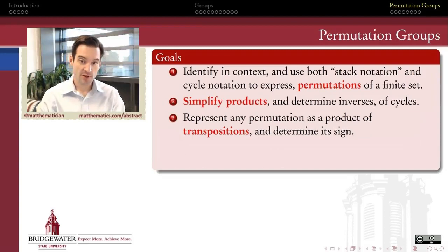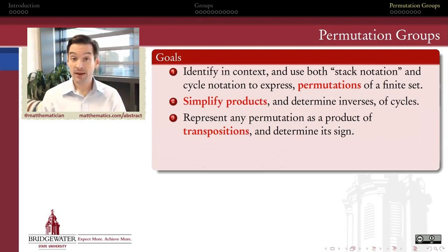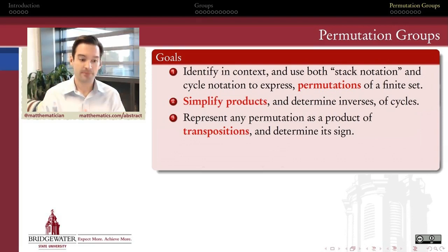We know every permutation can be expressed as a product of disjoint cycles. But even within the universe of cycles, there are some cycles that are more important — those are the cycles of length two that we call transpositions. In this video, we want to look at how every permutation can not only be expressed as a product of disjoint cycles, but also as a product of transpositions, and we can use that to determine a feature called the sign of a permutation.